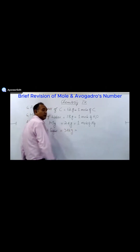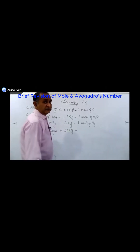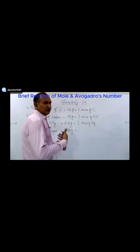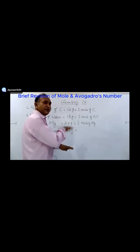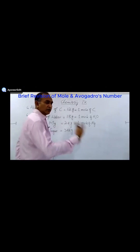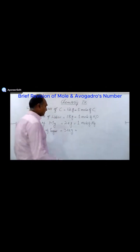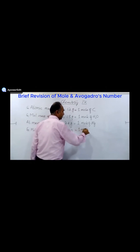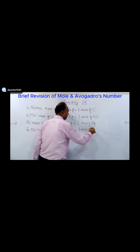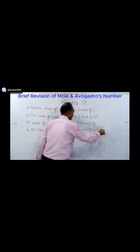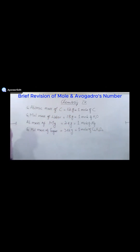If you are attending class for the first time, you won't be able to understand this, because chemistry especially grows vertically — whatever you know today, tomorrow's topic will be based on yesterday's topic. So 342 grams is called one mole of sugar.